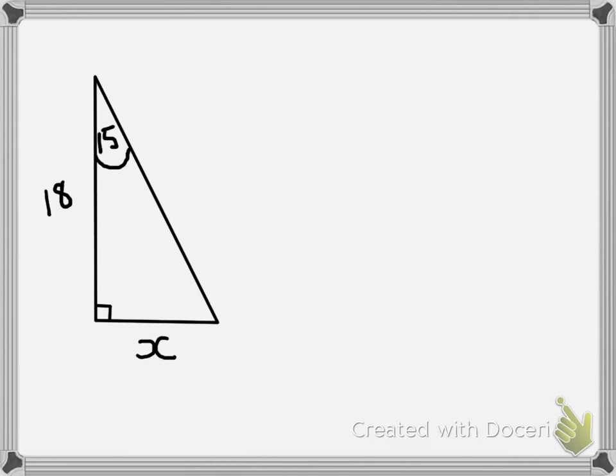So the first thing we do when we have a question like this asking us to find the side length x is we need to label our sides: our opposite, our adjacent, and our hypotenuse.